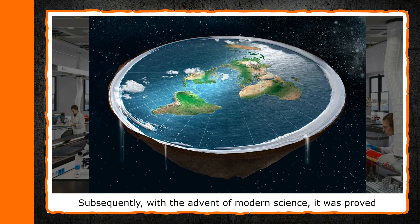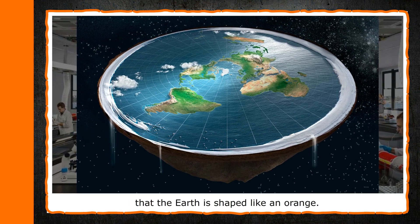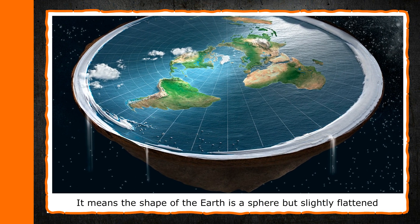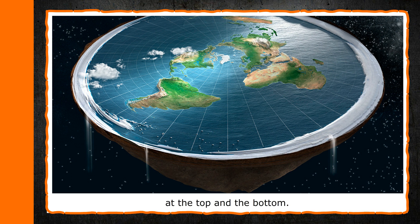Subsequently, with the advent of modern science, it was proved that the earth is shaped like an orange. It means the shape of the earth is a sphere but slightly flattened at the top and the bottom.